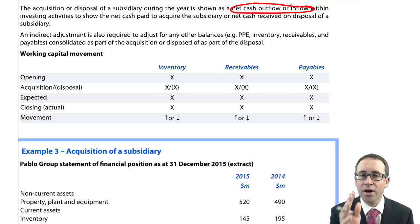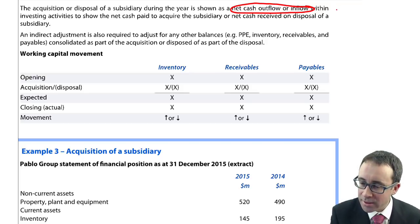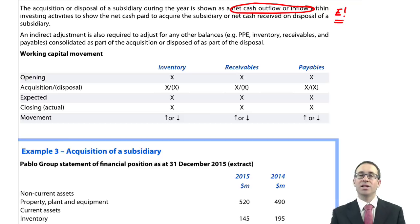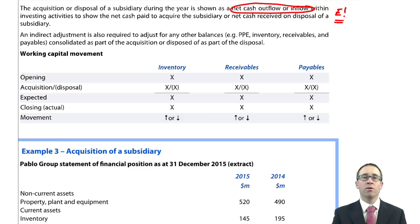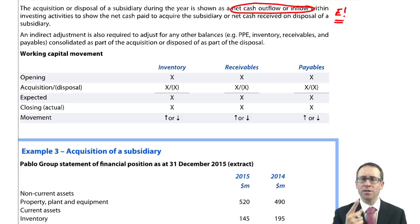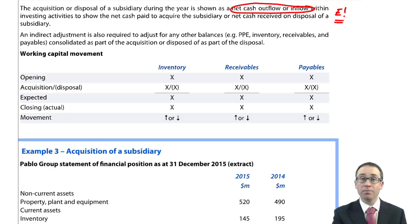If it's an acquisition, it's likely to be net cash paid, because you've paid a large amount and then a smaller cash balance comes in. If it's a disposal, then it's likely to be a net cash receipt, because cash comes in on disposal of the subsidiary, and a little bit of cash leaves as we no longer consolidate that subsidiary. This is easy marks within the exam — it's one line item; you take two figures and net them off into one.